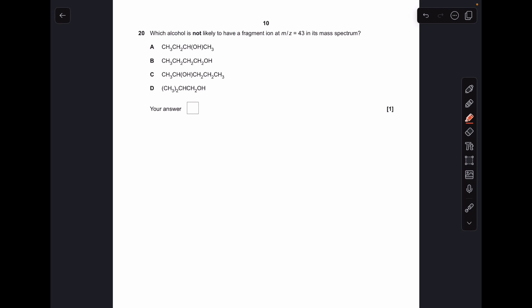And finally, which alcohol is not likely to have a fragment at m/z 43? So we'll just look and can we break something off and have a mass basically of 43? So A was the answer. I'll just show you why the others can have those fragments. So B, if you break that bit off, that's 43. Got the same fragment on that side of that alcohol. And for D, CH3 twice CH is also 43. So A is the answer.